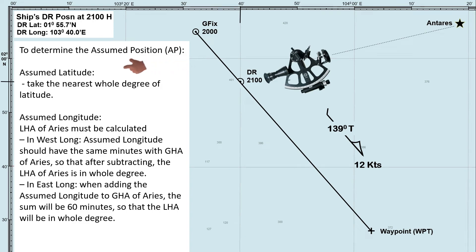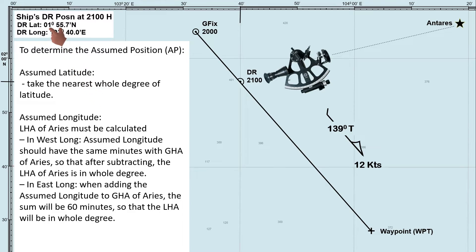Here is the procedure for determining the assumed position. For the assumed latitude, take the nearest whole degree of latitude. Since our DR latitude is 1 degree 55.7 minutes north, the whole degree is 2, so our assumed latitude is 2 degrees north.